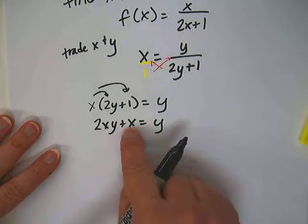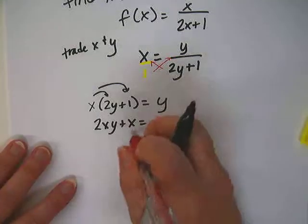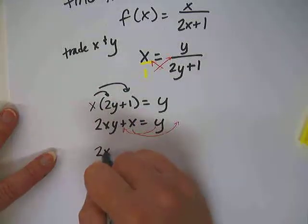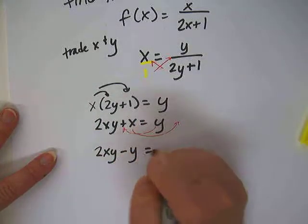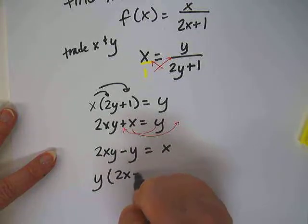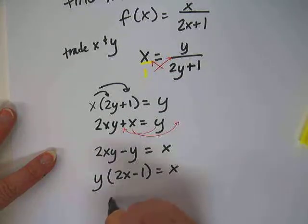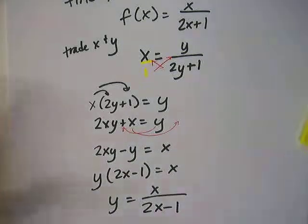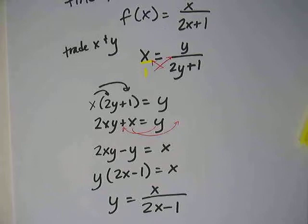Now I want to get the y's together on one side. So I'm going to subtract this over here and move that over there. So 2xy - y = x. Now we can factor out the y: y(2x - 1) = x. And then divide.